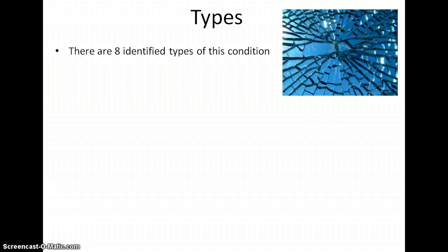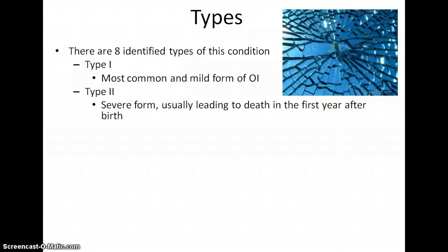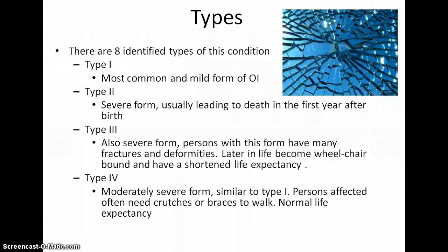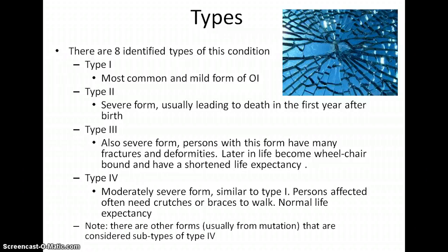There are eight identified types of OI. Type 1 is the most mild and common form. Type 2 is the very severe form leading to death in the first year. Type 3 is also a severe form — not as fatal as type 2, but a shortened lifespan and stature is expected. Type 4 is a mild form similar to type 1, but with a different genetic defect. The other four types are basically subtypes of type 4.